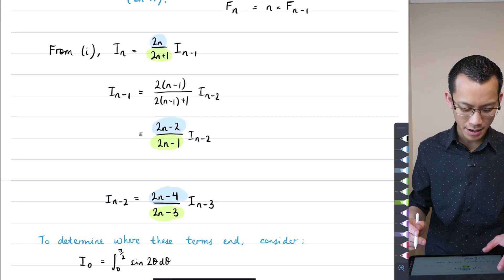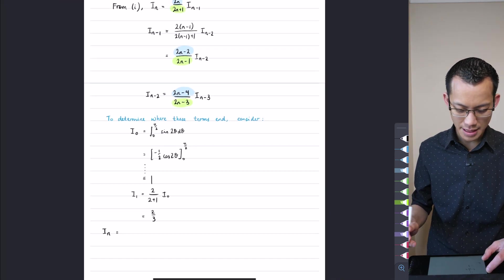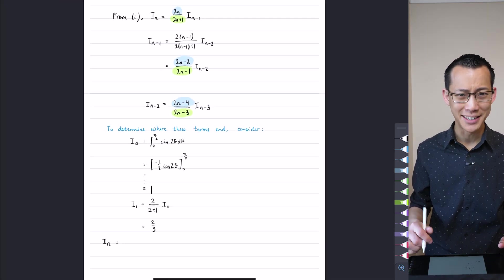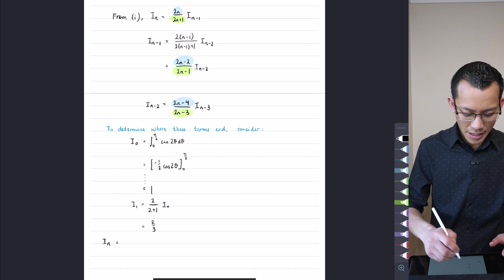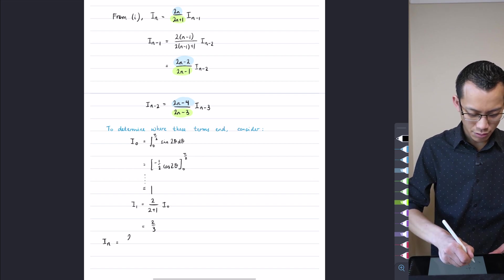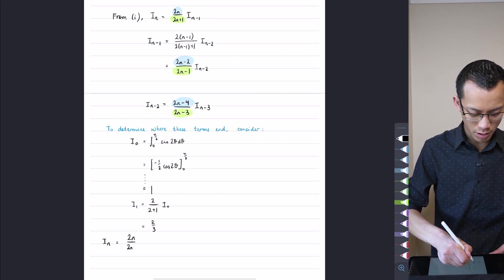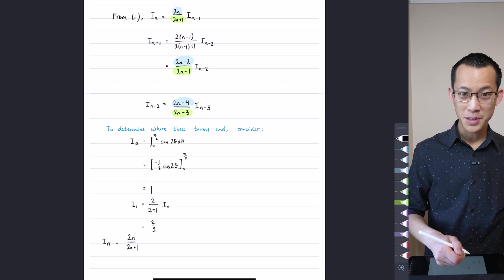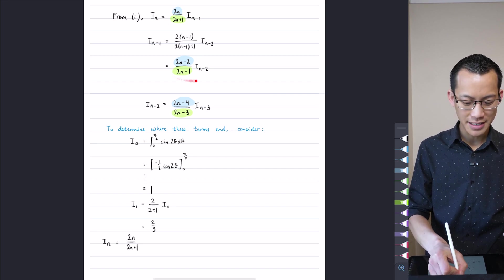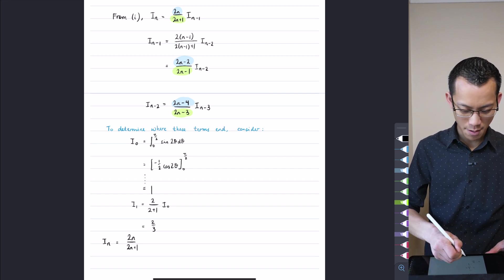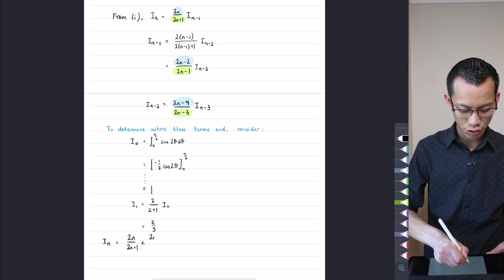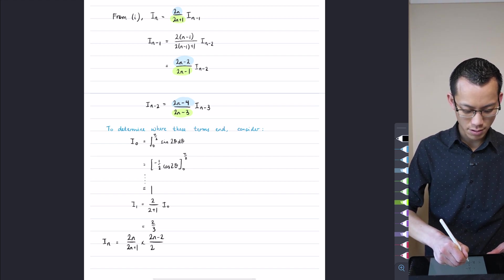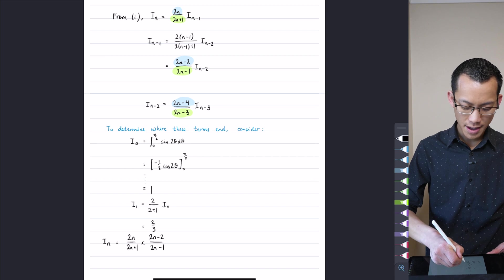So if I zoom out a little bit, I should be able to see that and write it at the same time. Hopefully it's big enough for you guys still to read. I'm going to go 2n over 2n plus 1, multiply by i_n minus 1, but I know what i_n minus 1 is. It's equal to this, right? So therefore I'm going to go multiplied by 2n minus 2 over 2n minus 1.